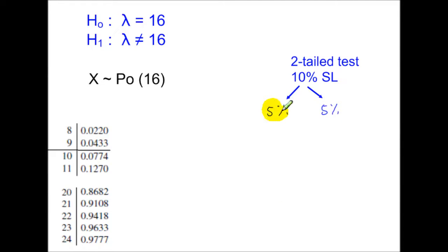Starting with the lower tail, these are some of the probabilities from the Poisson table. We're looking for probabilities which are less than or equal to 0.05 or 5%. So this one's less than 5%, so is this, but not this or this. So our critical region will include values from 0 up to and including 9, and 9 is our critical value.